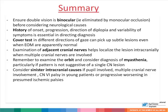In summary, when examining a patient with double vision, begin by ensuring that the double vision is binocular — meaning it is eliminated by monocular occlusion — before considering neurological causes. History of onset, progression, direction of diplopia, and variability of symptoms is essential in the diagnosis. Cover tests in different directions of gaze can pick up subtle lesions even when extraocular movements are apparently normal. Examination of adjacent cranial nerves helps localize the lesion intracranially when multiple cranial nerves are involved. Remember to examine the orbit and consider a diagnosis of myasthenia, particularly if the pattern is not suggestive of a single cranial nerve lesion. Consider sinister intracranial causes if the pupil is involved, if there are multiple cranial nerves involved, if there is a sixth cranial nerve palsy in a young patient, or if there is progressive worsening of diplopia in presumed ischemic palsies.